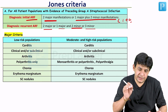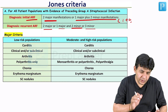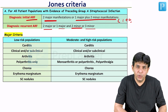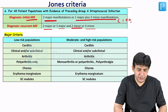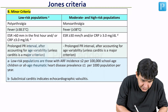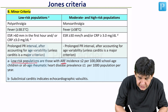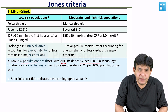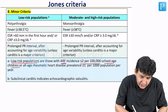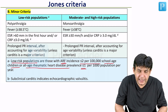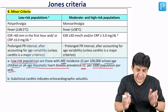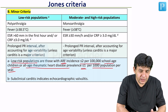Major and minor criteria are divided on the basis of low-risk population versus moderate-to-high-risk population. Low-risk populations are those in which acute rheumatic fever incidence is less than or equal to 2 per 100,000 school-age children, or all-age rheumatic heart disease prevalence is less than or equal to 1 per 1,000 population per year. That particular area is termed a low-risk population. If it is more than this, it is termed a high-risk population.